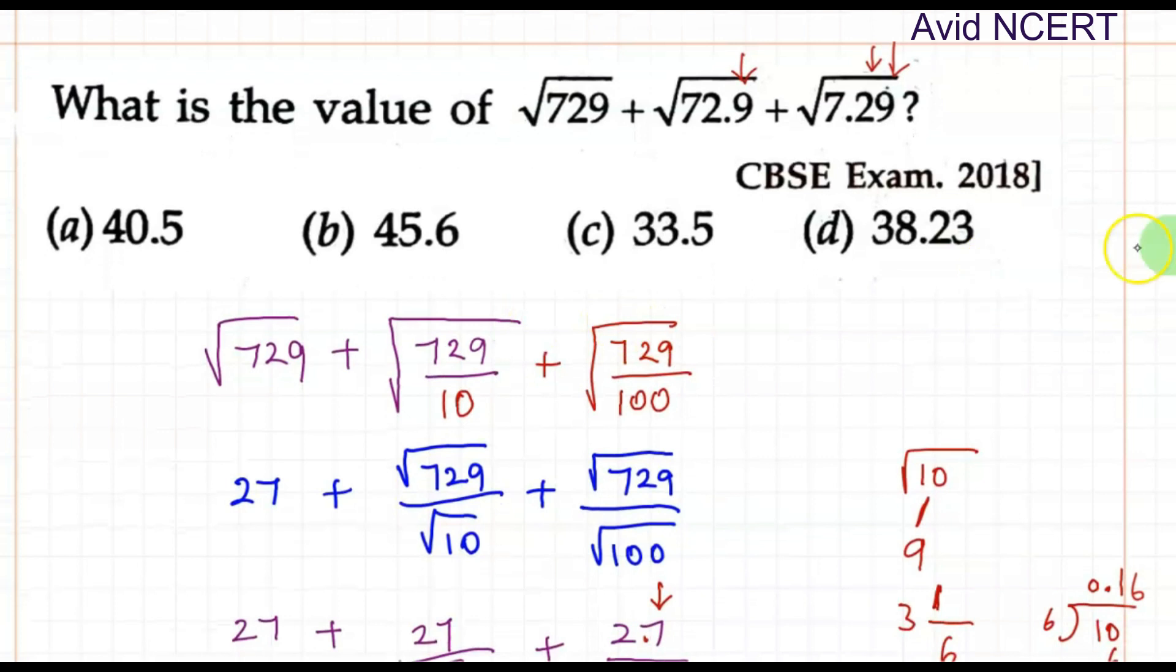The option which is closest to the answer we got here is 38.23. So therefore square root of 729 plus square root of 72.9 plus square root of 7.29 is 38.23. Thanks for watching. If you have any doubts please let me know in the comments.